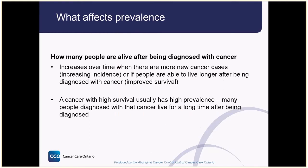What does it mean when we see changes in prevalence? Prevalence increases when there are more new cancer cases — so increasing incidence — or if people are able to live longer after being diagnosed with cancer, so improved survival. In other words, a cancer with high survival usually has high prevalence because many people diagnosed with that cancer live for a long time after being diagnosed.